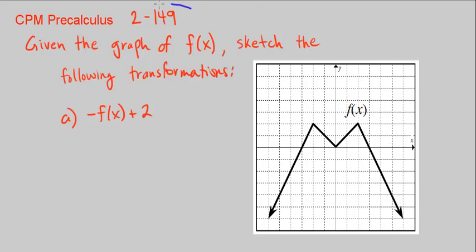This is CPM Pre-Calculus Chapter 2, number 149. Given the graph of f of x here, sketch the following transformations. Part a: here we have negative f of x plus 2.